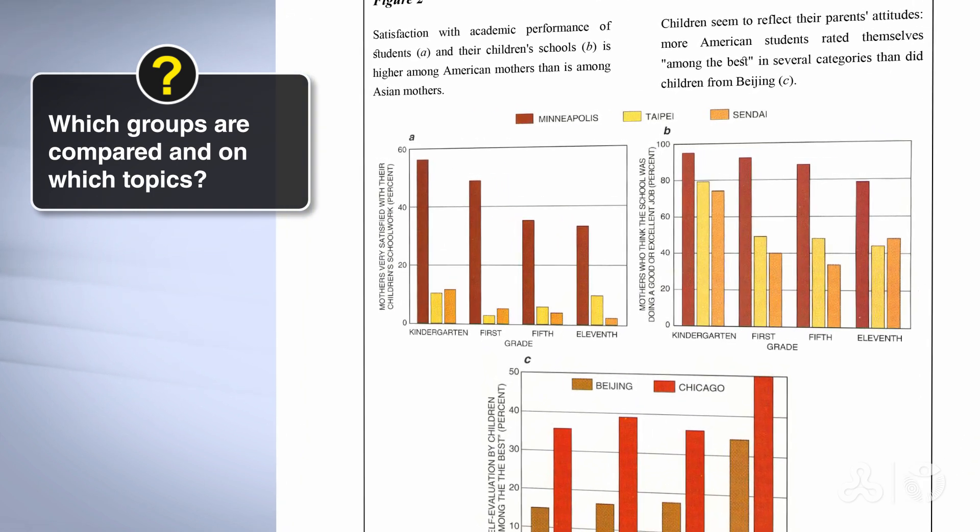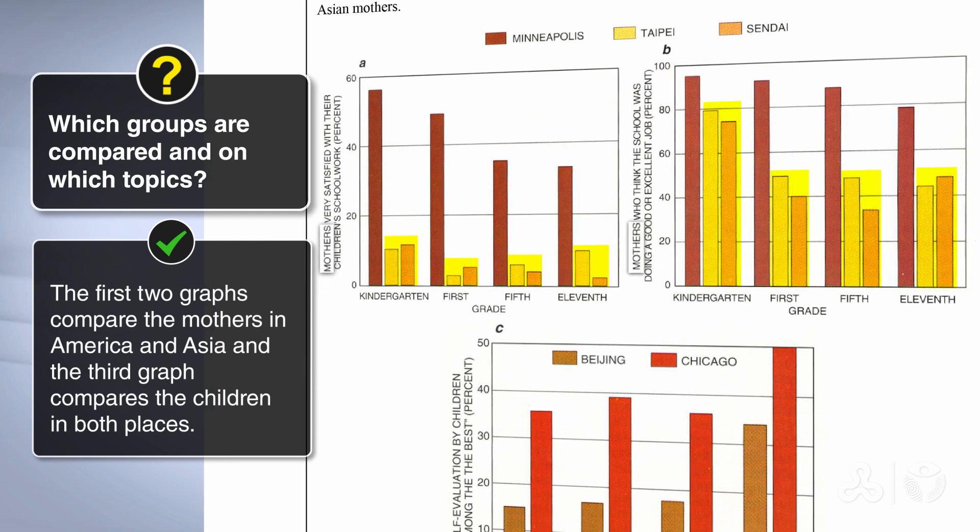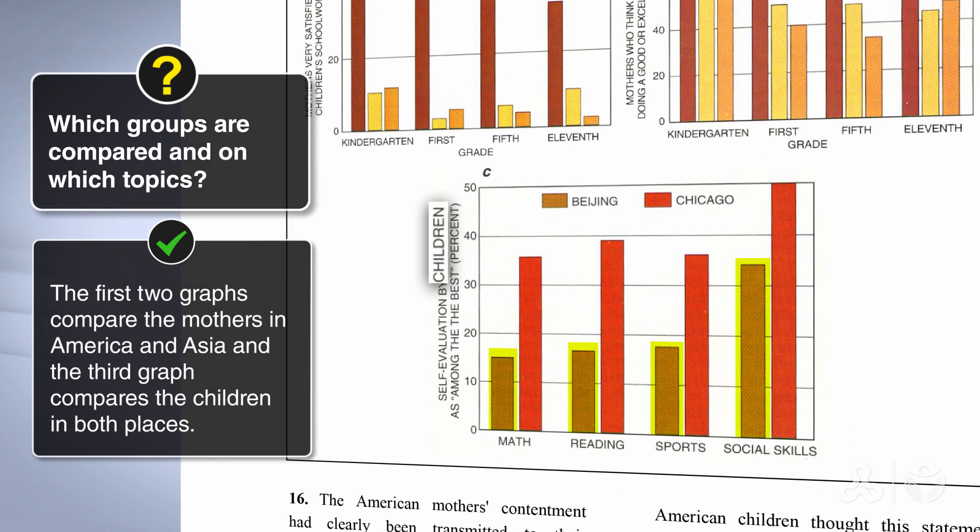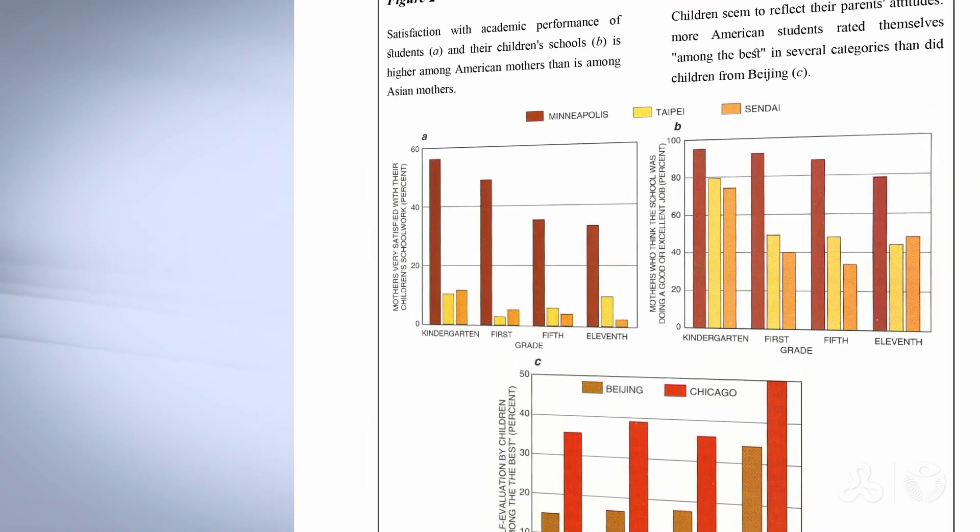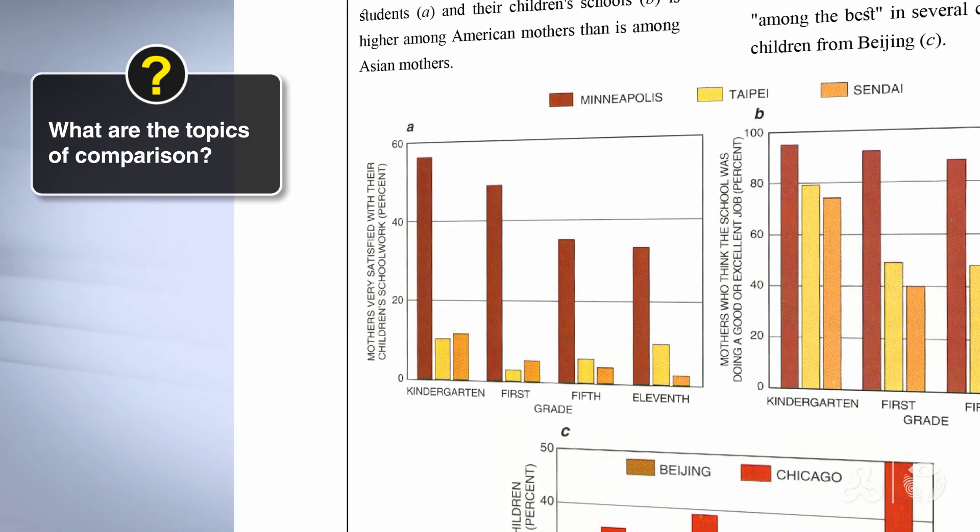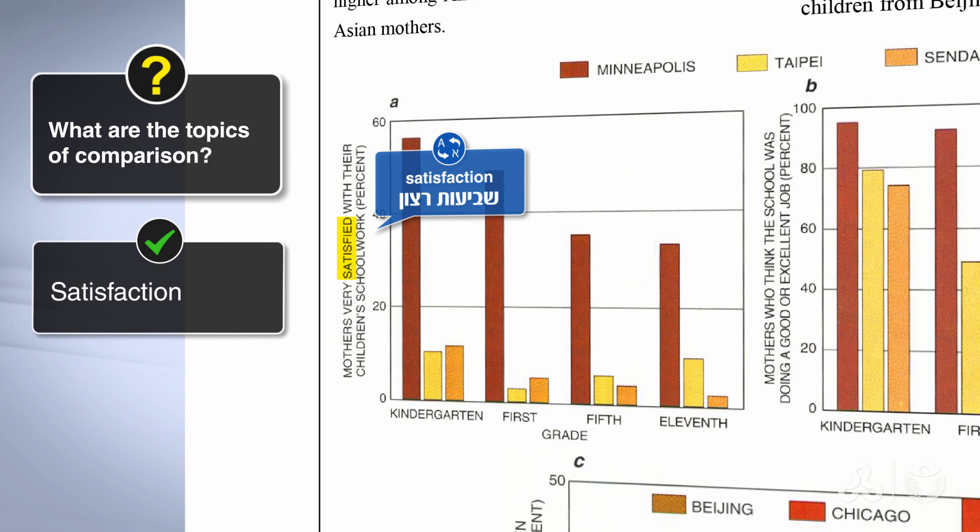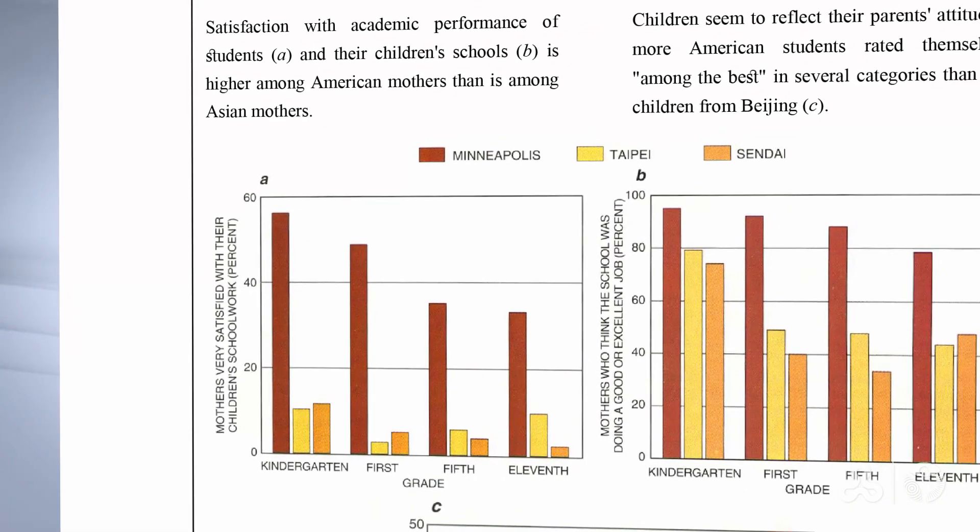Okay, we see that the first two graphs compare the mothers in America, in Minneapolis, and Asia, Taipei and Sendai. And the third graph compares the children in both places. Those are our groups. What are the topics of comparison? Both graphs, A and B, deal with satisfaction.